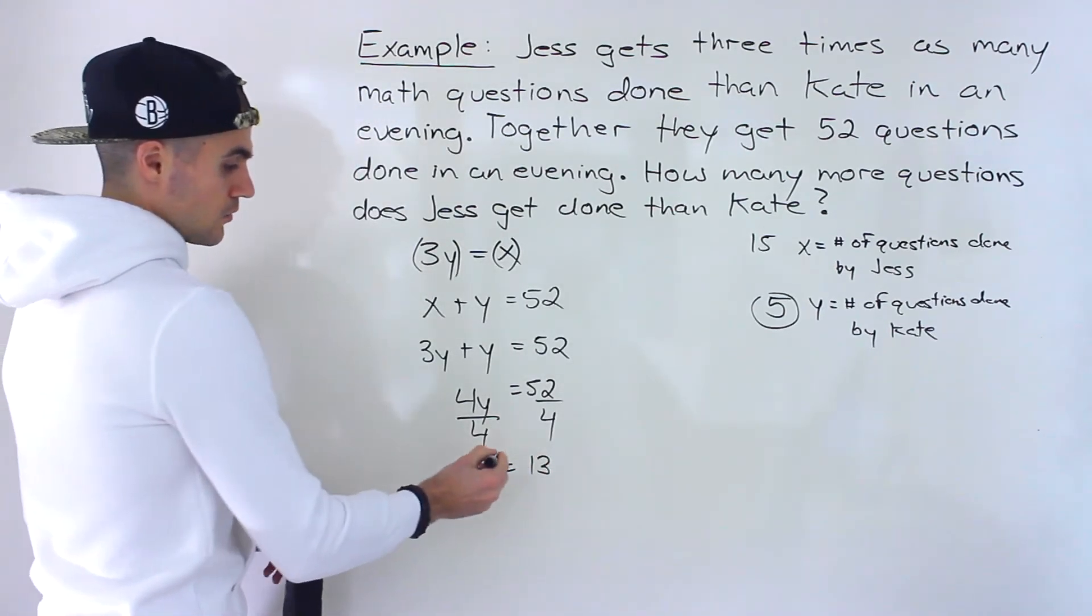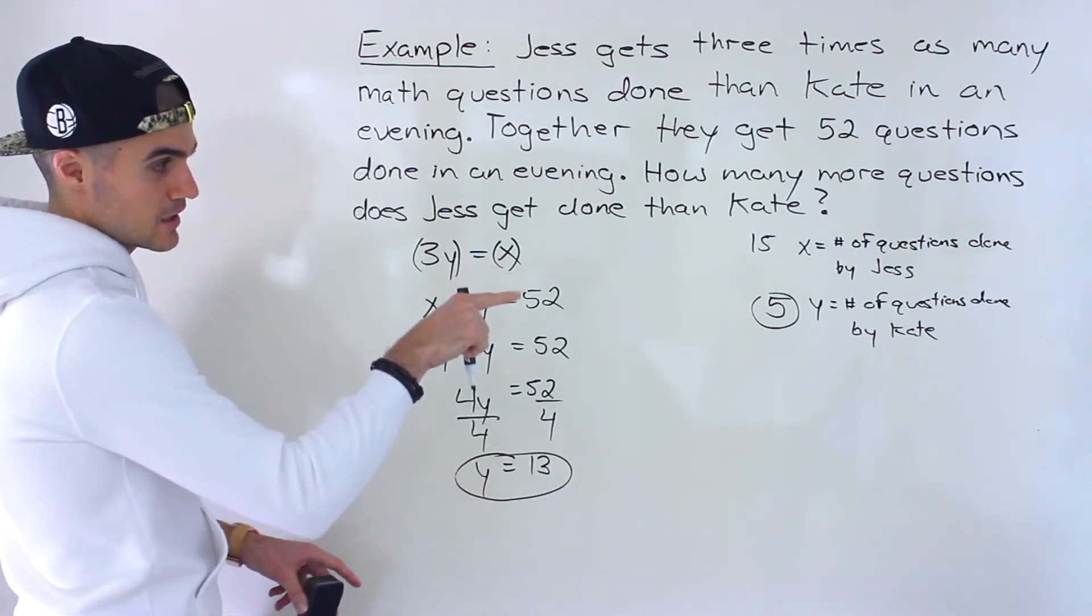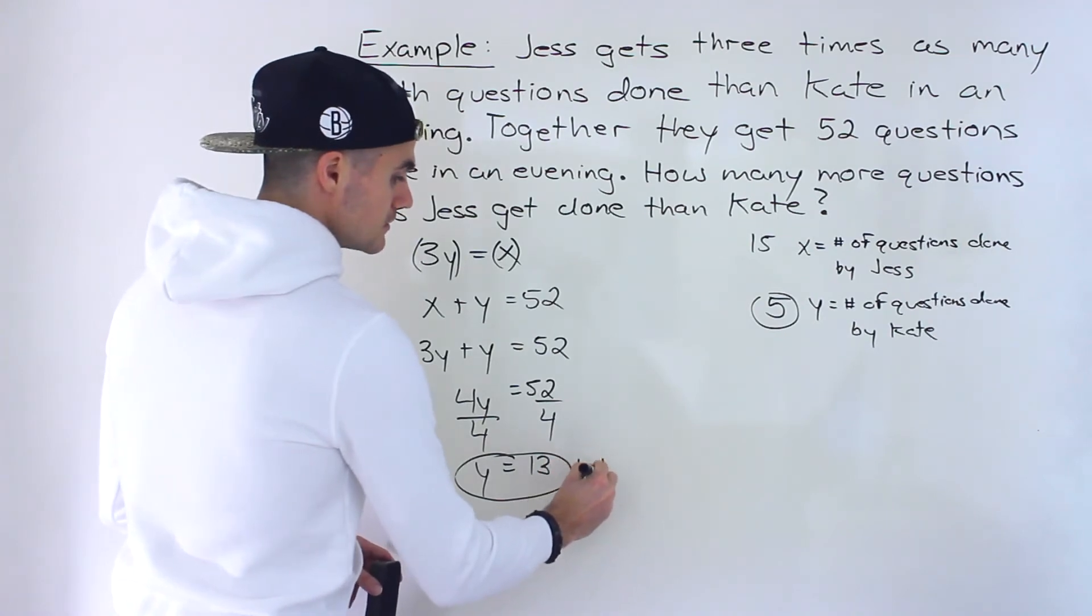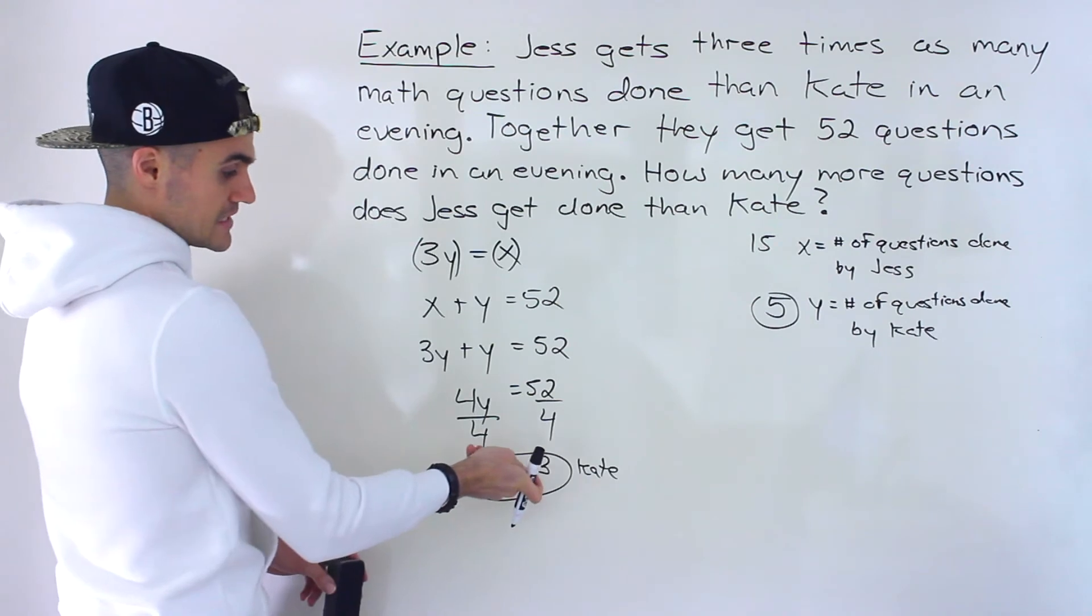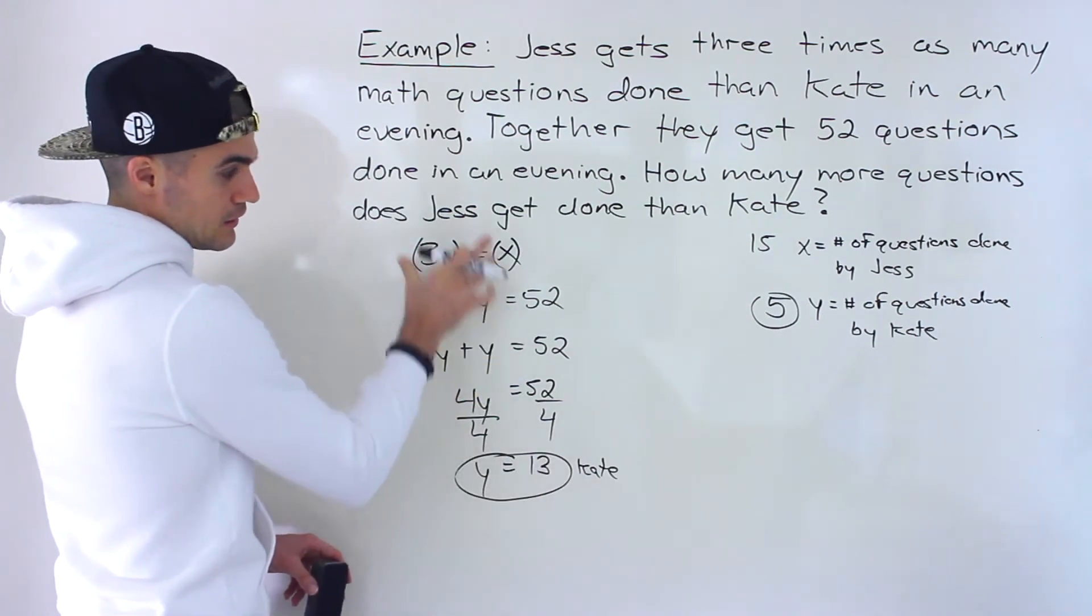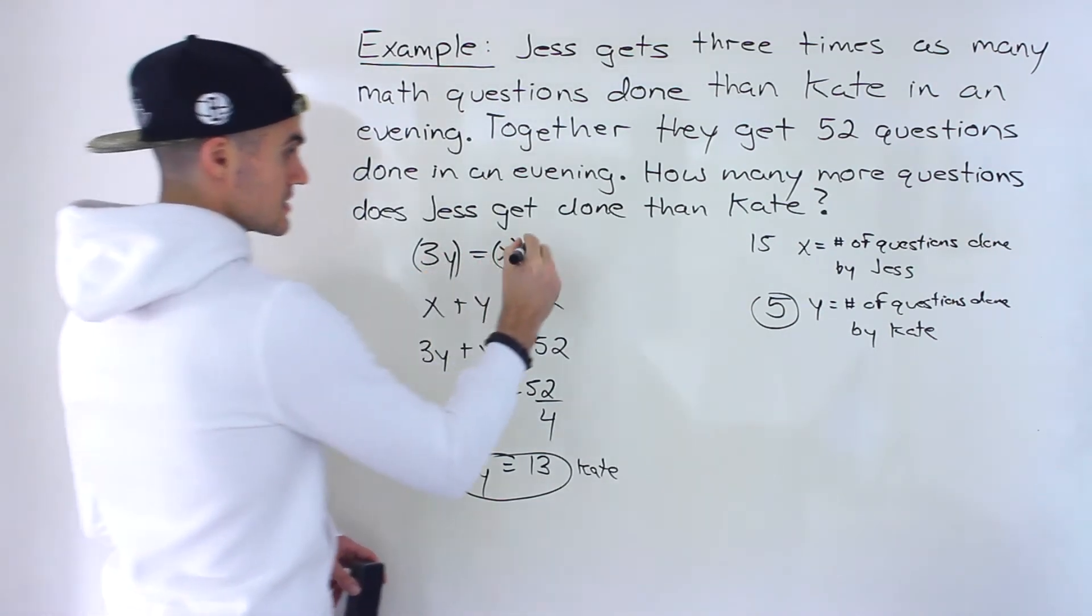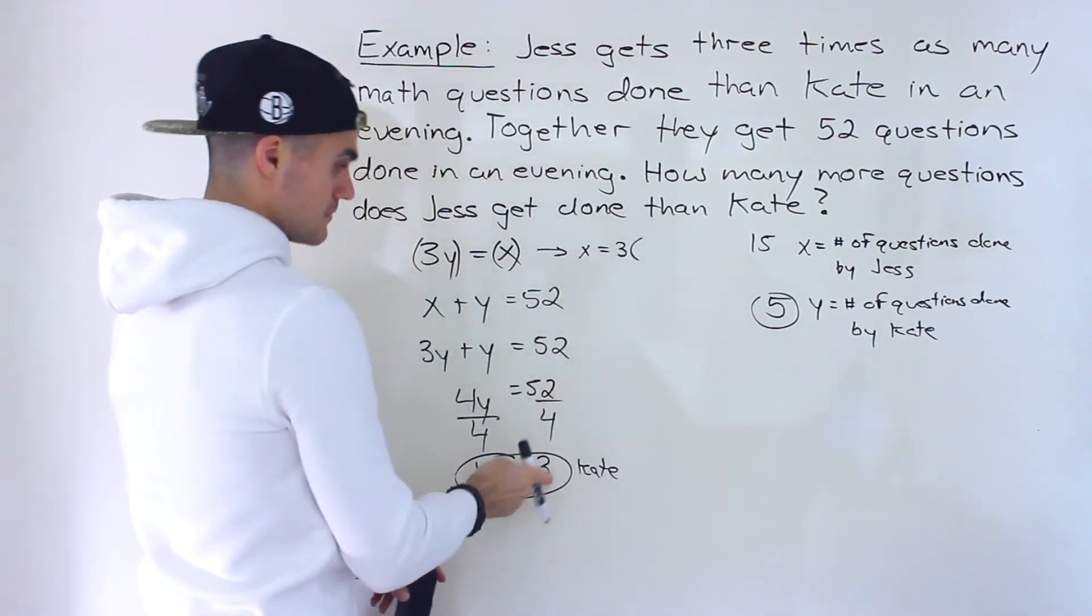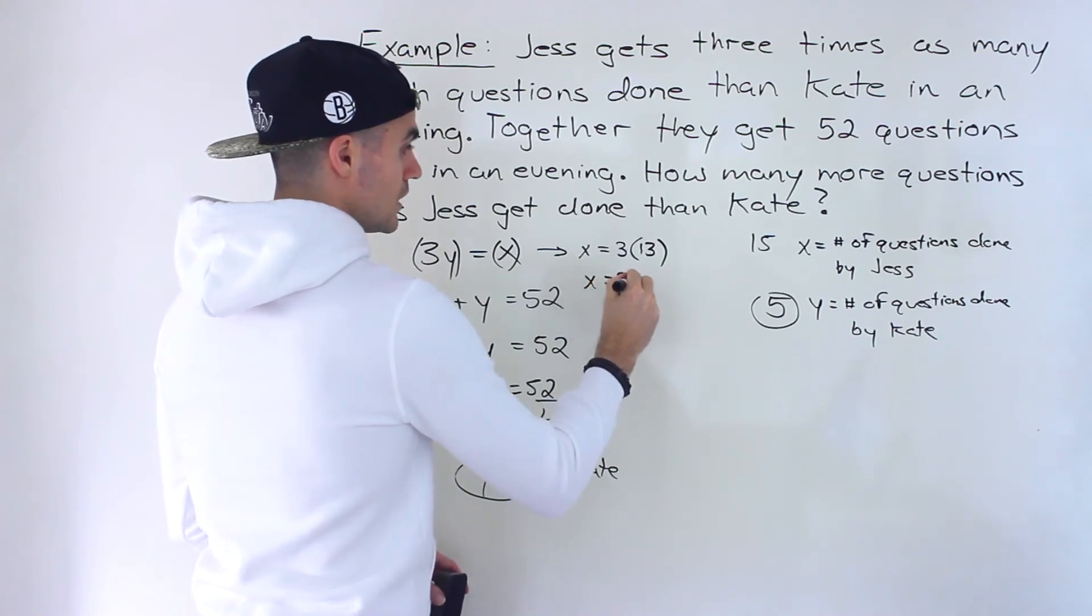So what does this represent? y is equal to 13. That's the number of questions done by Kate. If we want the number of questions done by Jess, we could simply take y equals 13 and plug it into either equation and solve for x. I feel like this one is easier since x is already isolated. So x would equal 3 times this value of 13, which would be 39.